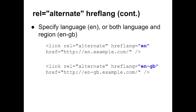Whether you specify rel alternate hreflang in on-page markup, HTTP headers, or a sitemap, you'll include an hreflang value. This value can be a general language, like EN for English, for all English users worldwide. Additionally, you could include both language and country, such as EN-GB, to better target English speakers in the UK. If you choose to create a country-based language variation such as EN-GB, we recommend also having a general language version like EN to appeal to English speakers worldwide.